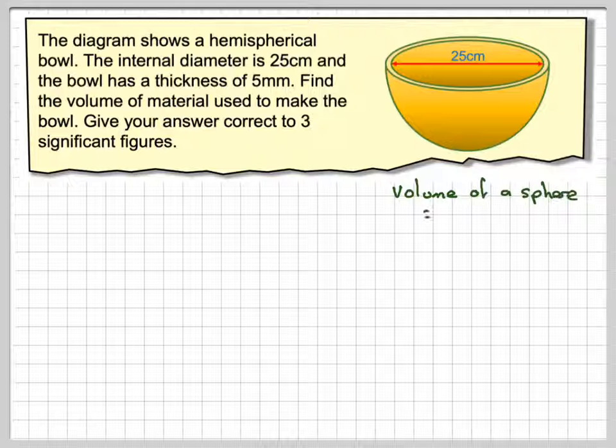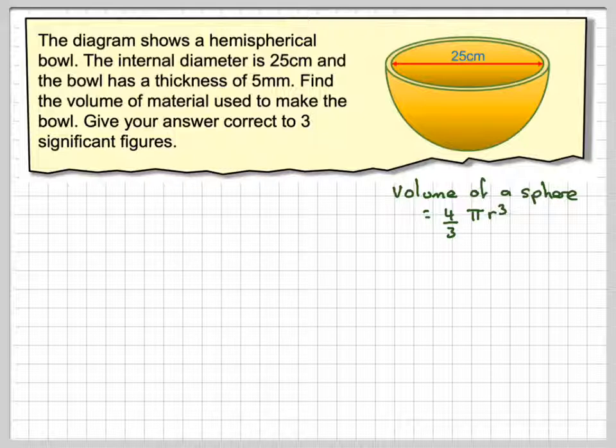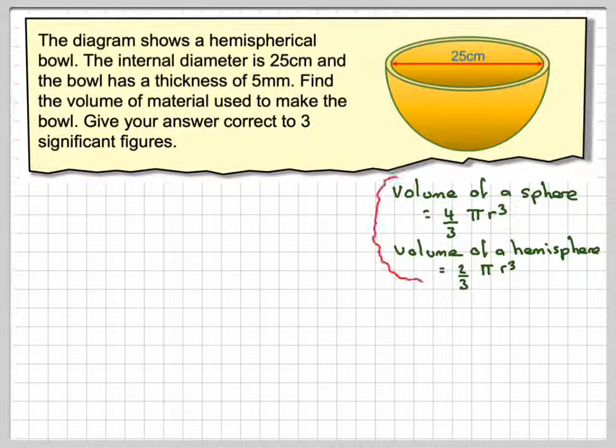First of all we need to know the volume of a sphere, which is on the exam paper, which is 4 thirds pi r cubed, but we only have a hemisphere, so the volume of a hemisphere will be half of that, which is 2 thirds pi r cubed.